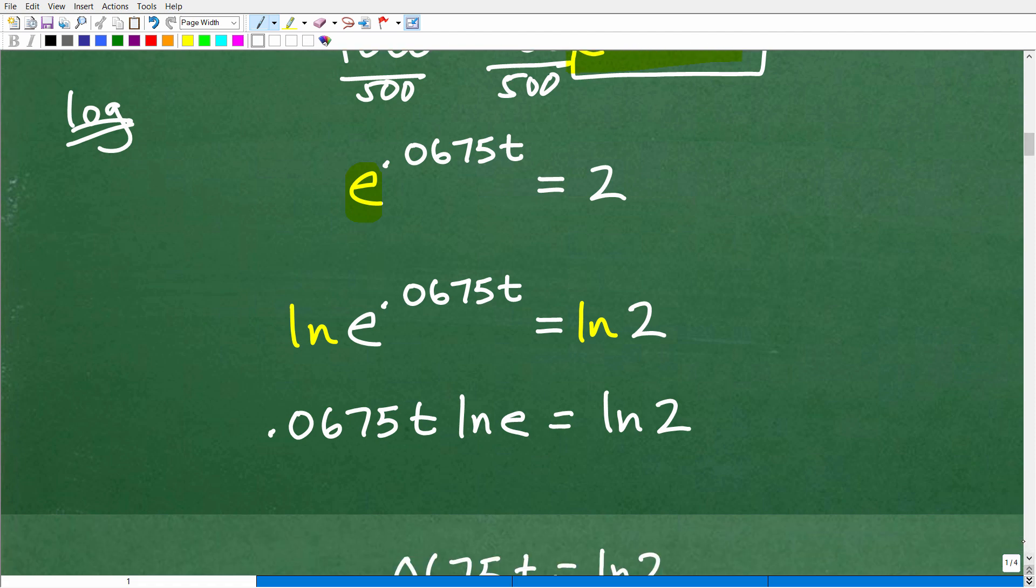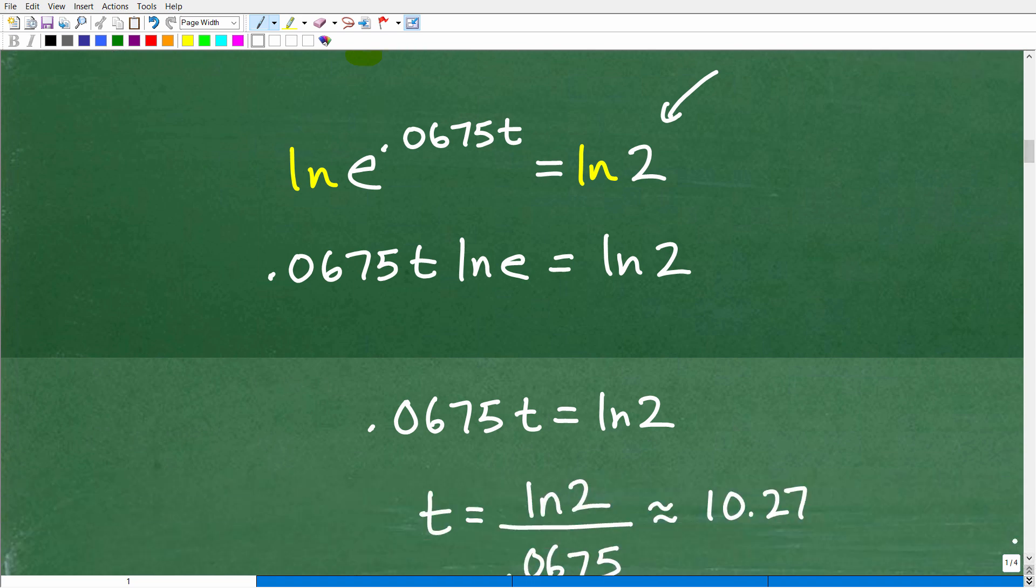Okay, so let's go ahead and take the L-N of both sides. So this is L-N, E, to this 0.0675T, and L-N, too. So if you go into your calculator, L-N, too, that's just some number, okay? So don't, you know, freak out and be like, oh, what is that? Oh, it's just some value. I can actually turn this into a decimal. So keep that in your mind's eye.